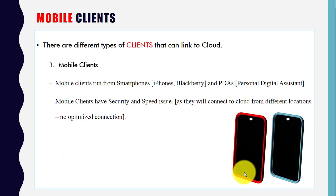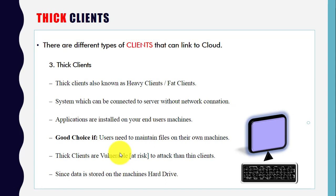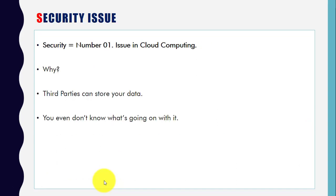To summarize the three client types: mobile clients access cloud services using smartphones or PDAs, but have security and speed issues due to connecting from different locations with no optimized connection. Thin clients have no hard drive or DVD ROM and simply display what's on screen — best for accessing cloud services and virtualized servers, and less expensive. Thick clients (fat clients) have applications installed on the end user's machine, which is a security risk as data is stored on the hard drive.